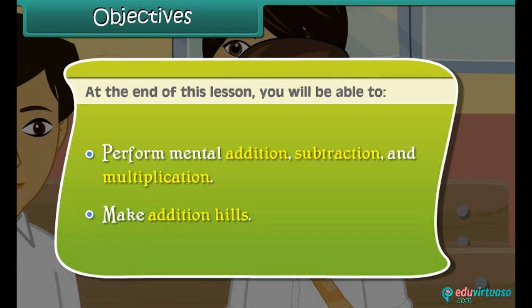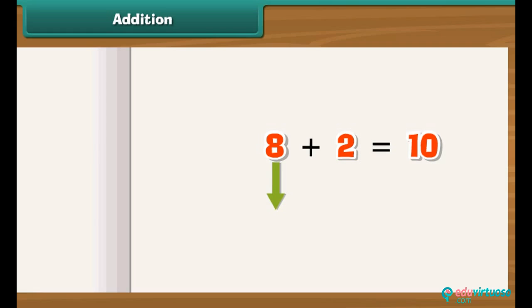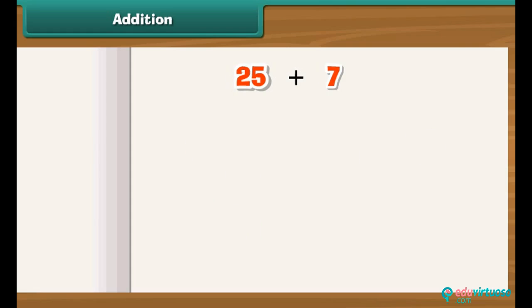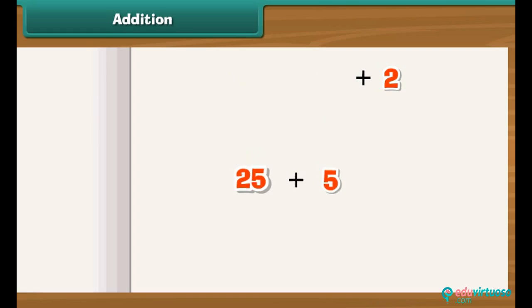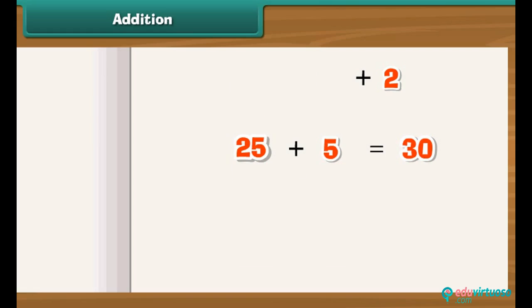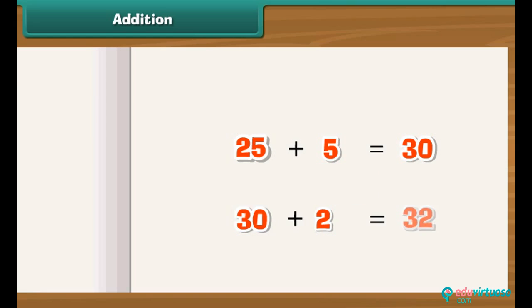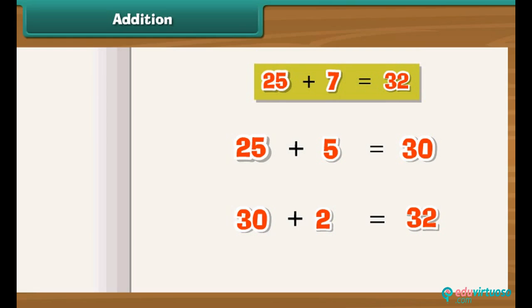You will also learn to make addition hills. To master mental arithmetic, you must get your basics right. A basic fact about addition is that the sum of two numbers does not change when we split the numbers into two or more parts. For example, to add 25 and 7, we can break 7 into 5 and 2. It is easy to add 25 and 5 to get 30, then add 2 to get 32. Thus the sum of 25 and 7 is 32.